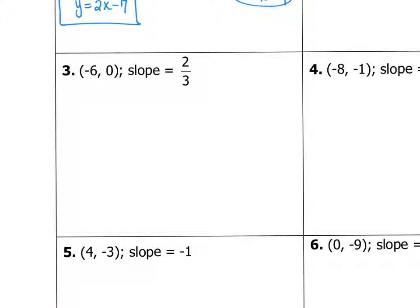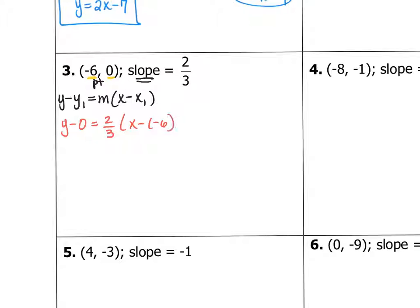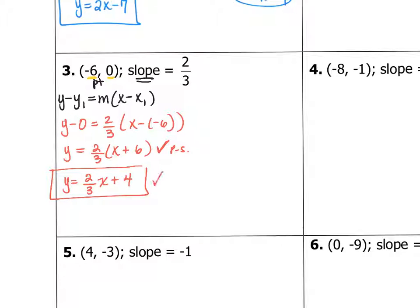Let's try number 3. We're given a point and a slope, so we put it in point-slope form. Our y is 0 and our x is negative 6. So y minus 0 equals the slope times x minus negative 6. That gives us y equals two-thirds x plus 6. Distributing the two-thirds: y equals two-thirds x plus 12 over 3, which is 4. And now we have it in slope-intercept form.